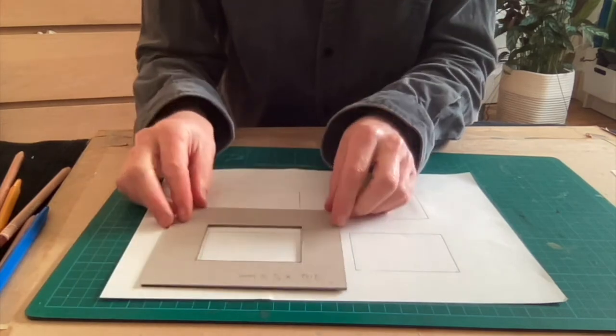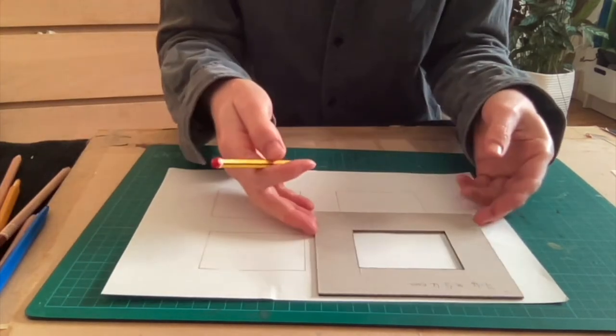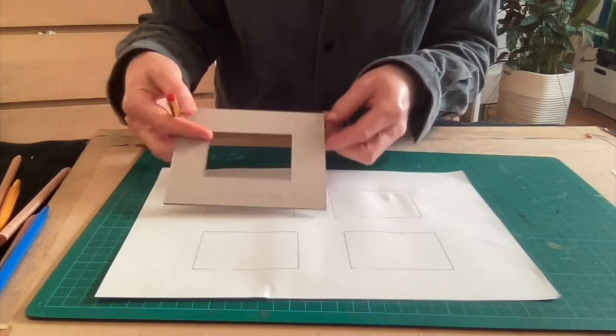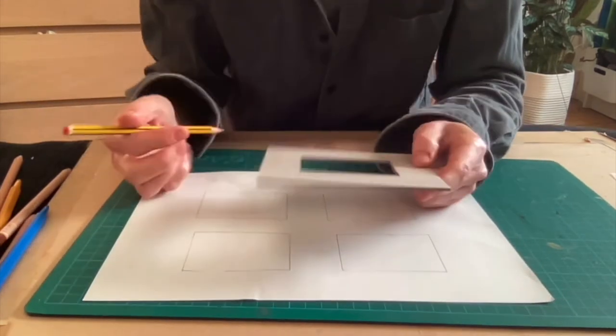So now we're ready to find some motifs. First use the window of the viewfinder as a template and draw a few rectangles on a piece of paper. We'll draw our motifs directly into these.